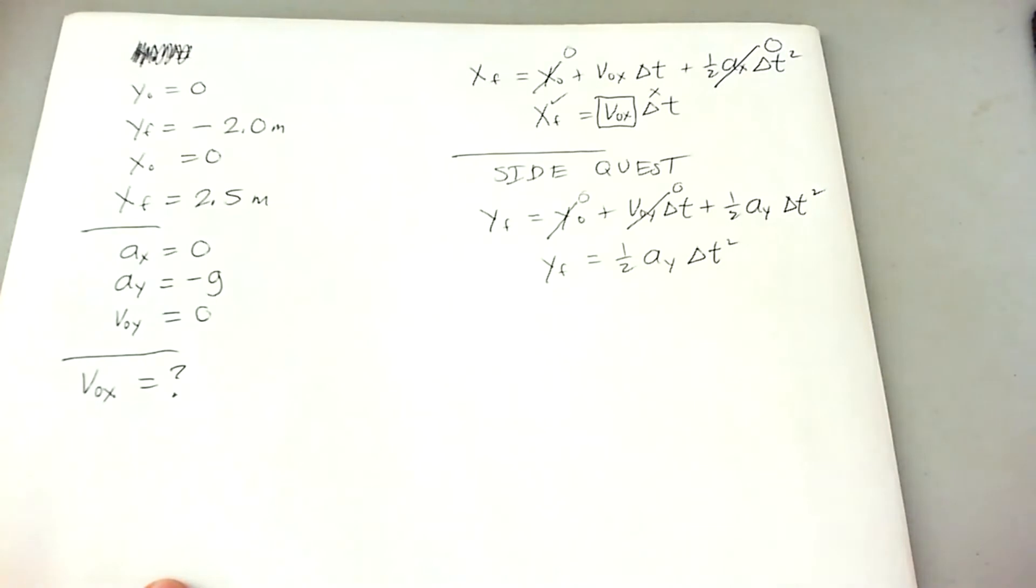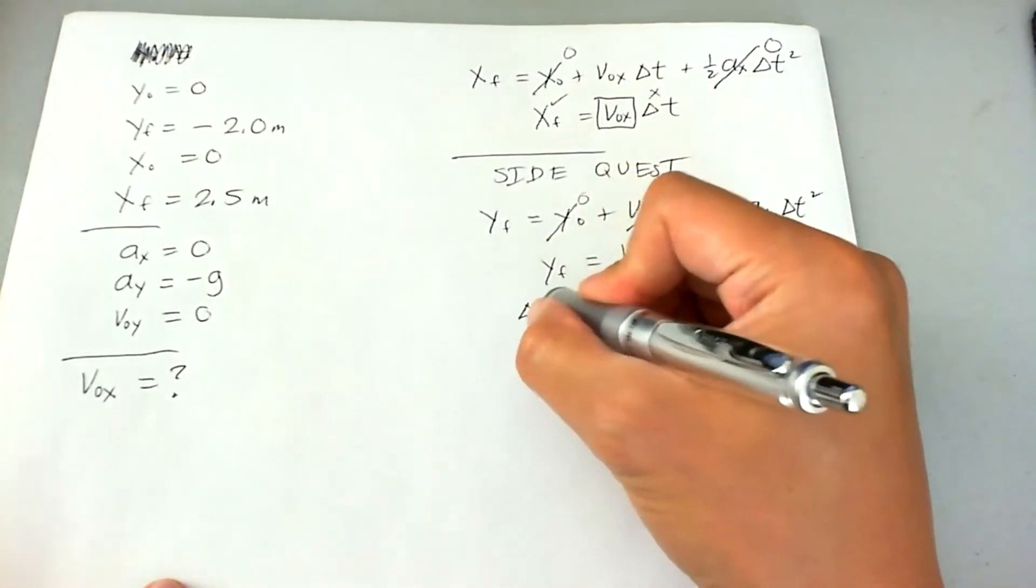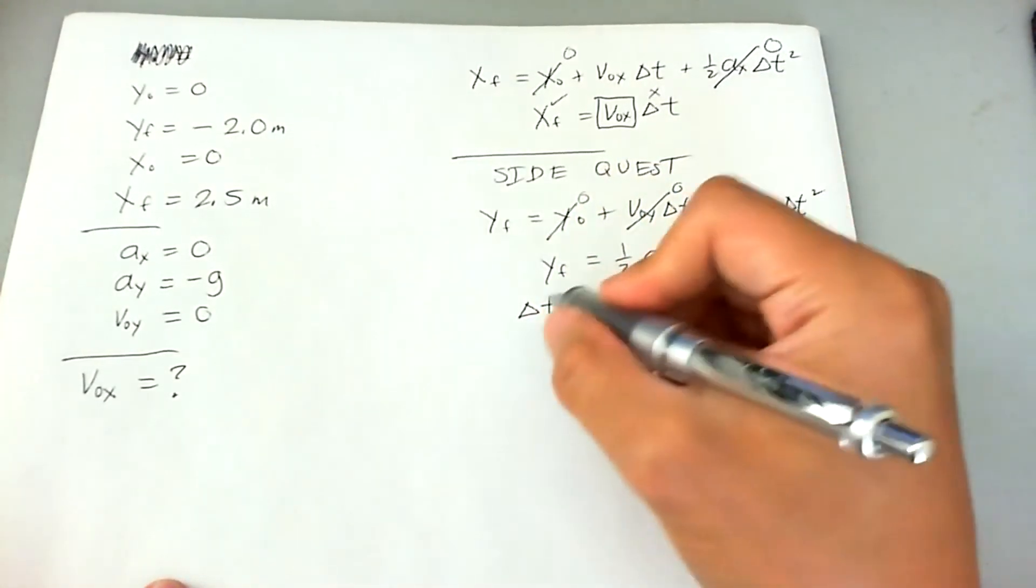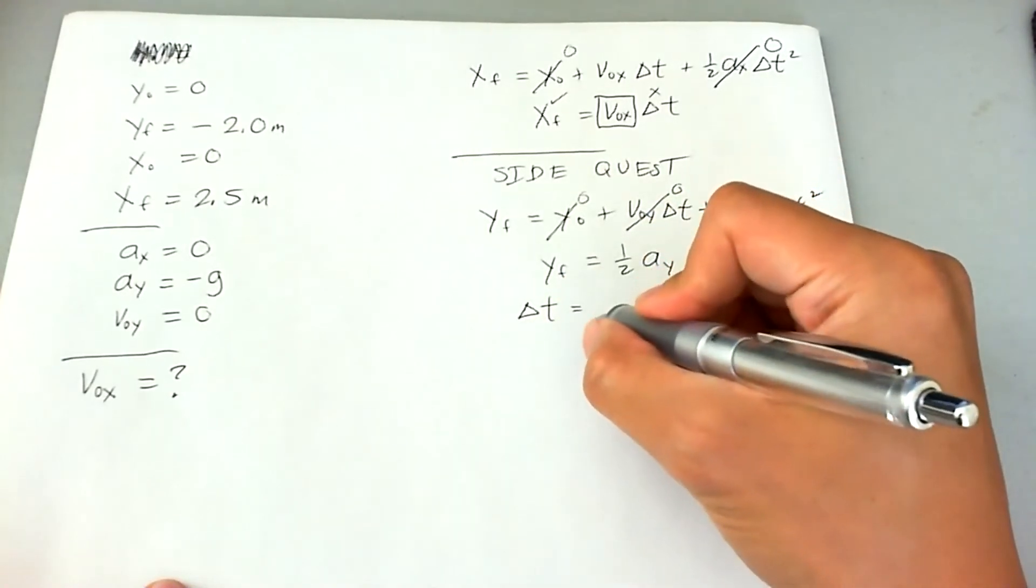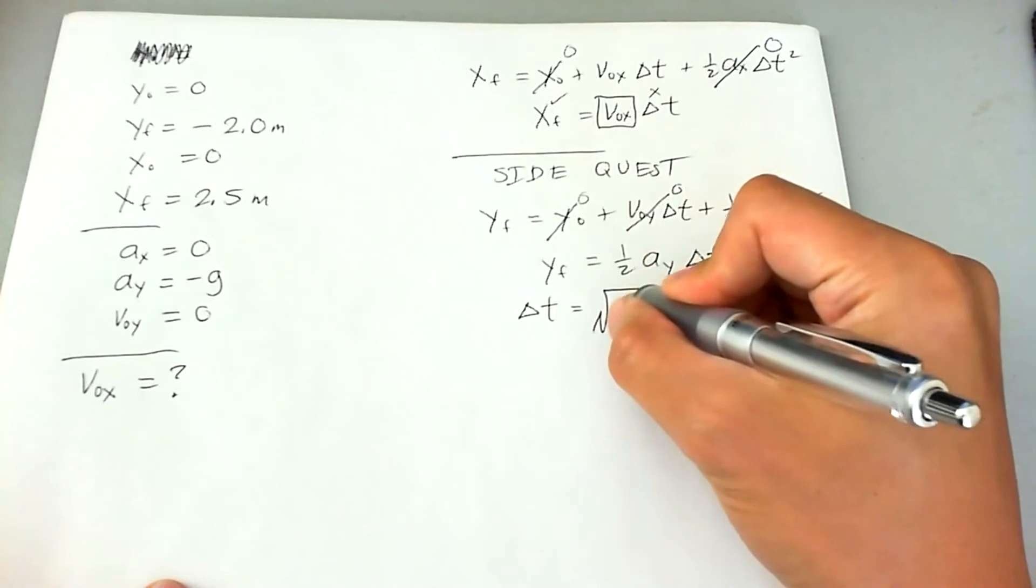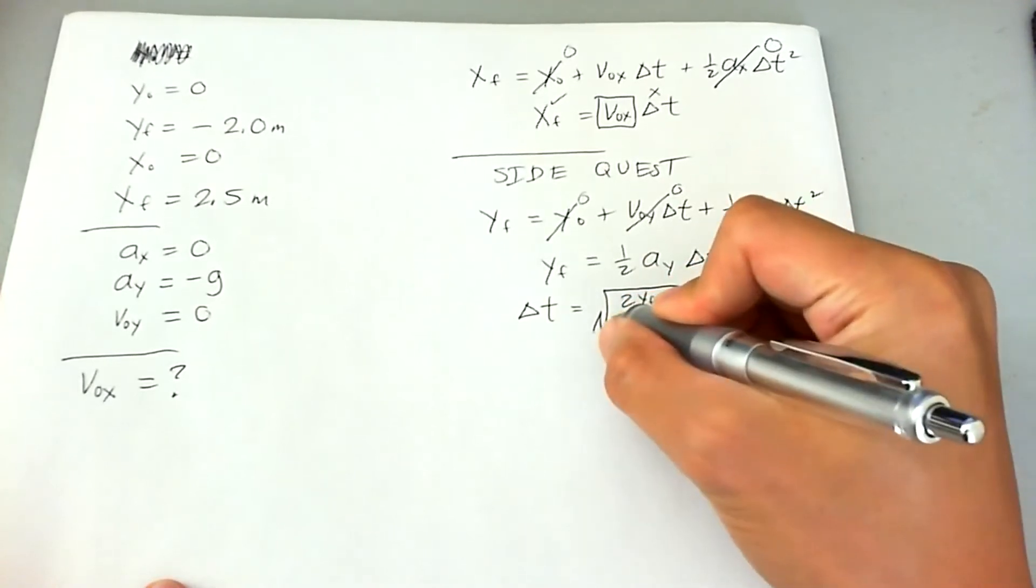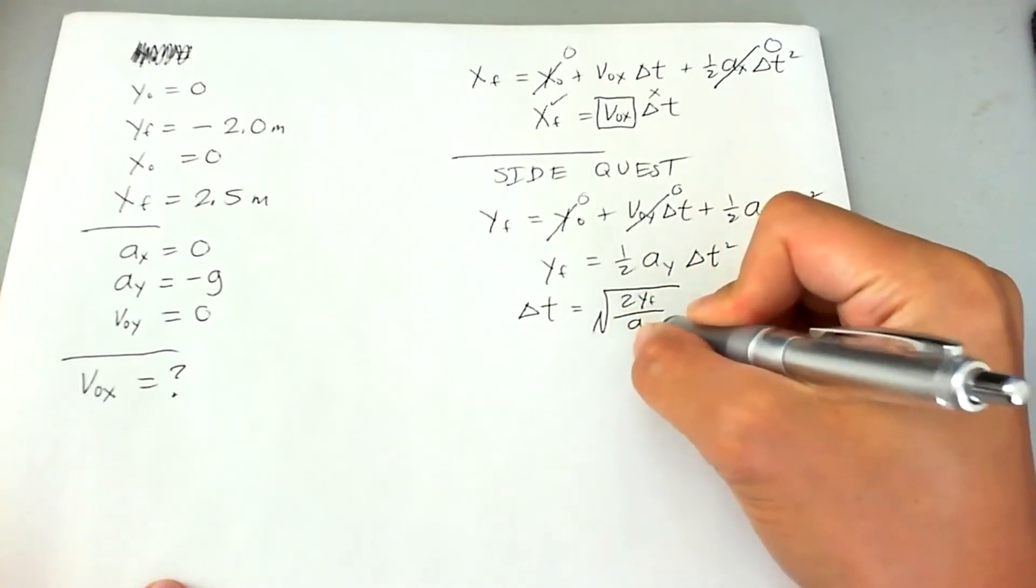So now we have final Y is one half A Y delta T squared. And let's go ahead and isolate delta T by putting it off to the left and making everything else to the right.